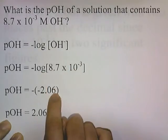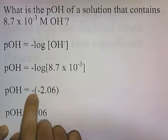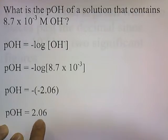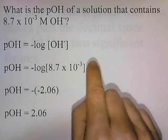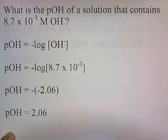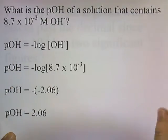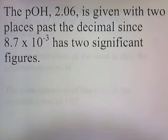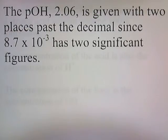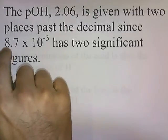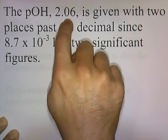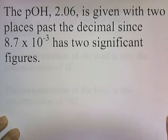The log of this number is negative 2.06, and then a negative times a negative is a positive, so you end up with 2.06. When the concentration of hydroxide is 8.7 times 10 to the negative third, the pOH is 2.06. The pOH 2.06 is given with two places past the decimal since 8.7 times 10 to the negative third has two significant figures — the 8 and the 7. That's how you do it.